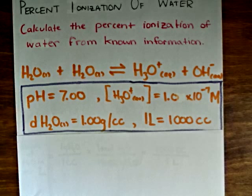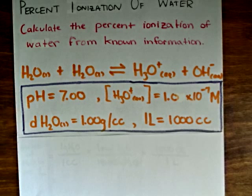because they're in a one-to-one ratio. The percent ionization will be equal to the concentration of the hydronium ion divided by the total number of moles of water in 1 liter times 100%.